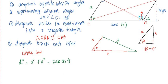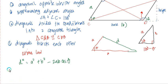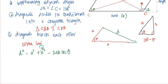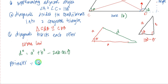We can also solve for the perimeter of a parallelogram. Since opposite sides are equal, the perimeter is 2a plus 2b. For the area of a parallelogram, there are different formulas depending on what is given. If the base and height are given, the area is simply base times height. If the two sides and any interior angle are given, the formula is: Area = AB sin theta.